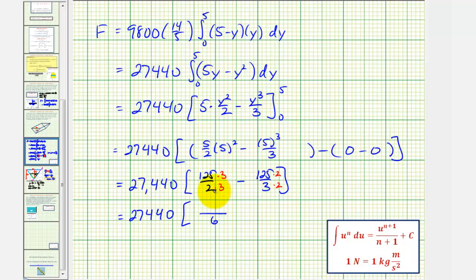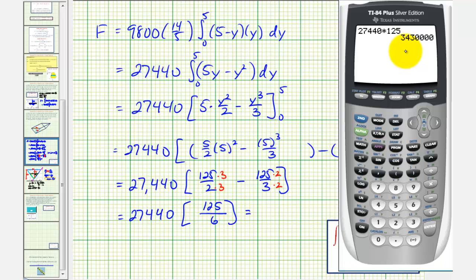Common denominator here is six. So we have 375/6 minus 250/6, which would be 125/6. So this gives us 3,430,000/6.